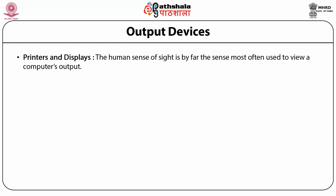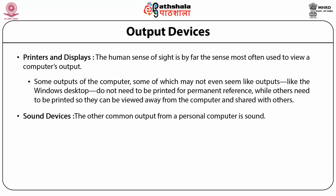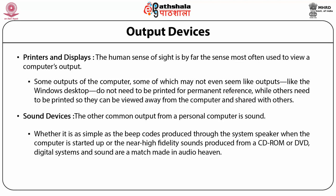The printer appeals to the human sense of sight, which is the sense most often used to view computer output. Texts and graphics can be permanently placed on paper by a printer or viewed temporarily on a monitor. Some computer outputs like the Windows desktop do not need to be printed, while others need to be printed for permanent reference and sharing. Another common output from personal computers is sound — from simple beep codes to high-fidelity sound produced from a CD-ROM or DVD.